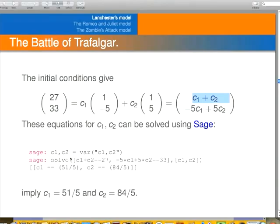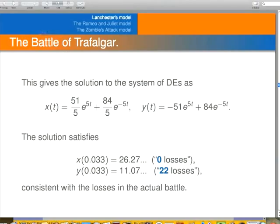Then we use SAGE to solve that. It's pretty easy. c1 plus c2 is 27. And then this other equation is here. We ask SAGE to solve it using the solve command. And it gives us c1 is 51 over 5, and c2 is 84 over 5.